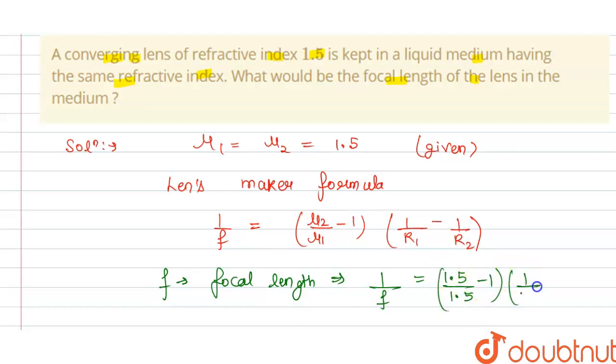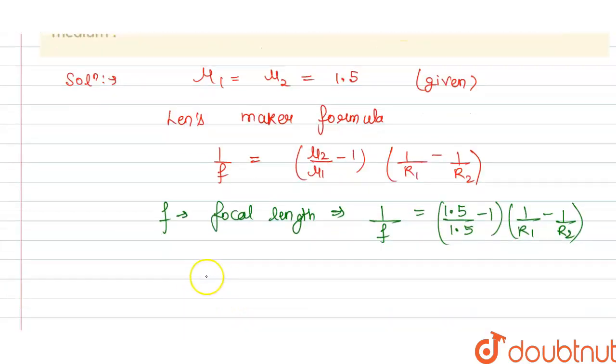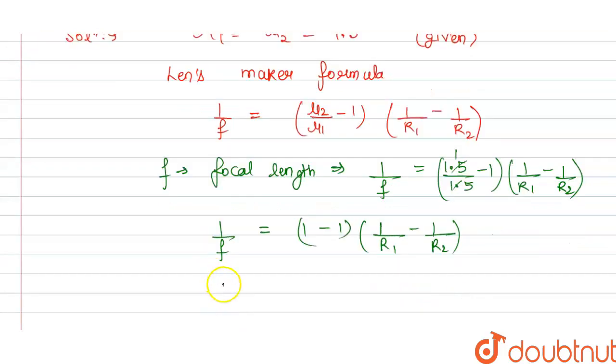So from this we get 1 divided by f equals - this will cancel out at 1 - so 1 minus 1 multiplied by 1 divided by R₁ minus 1 divided by R₂. So this will become 0.